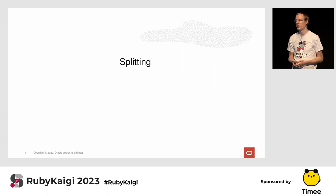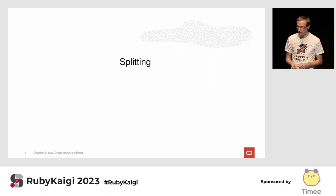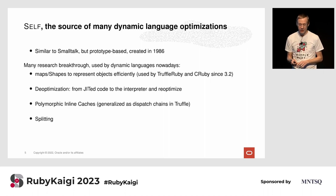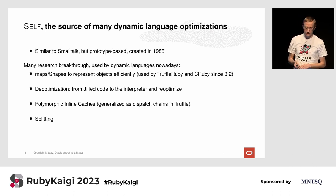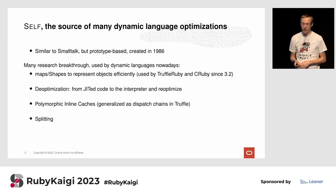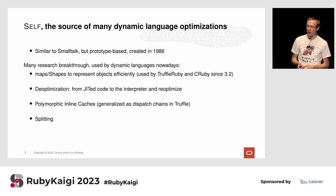Today I want to talk about splitting, and to talk about splitting I want to go back to its origins — the Self programming language. Self is similar to Smalltalk, which is similar to Ruby, and it was created a long time ago, in 1996. The researchers who worked on Self produced many fundamental breakthroughs still used by almost all dynamic languages today.